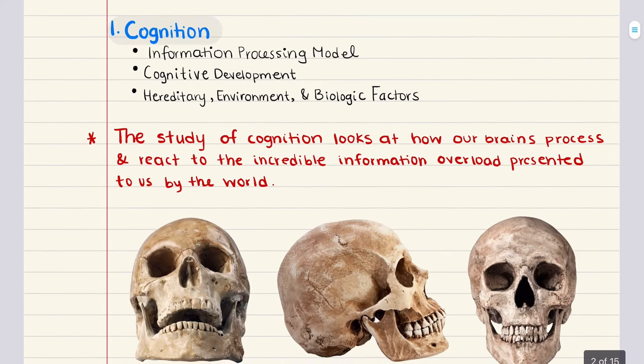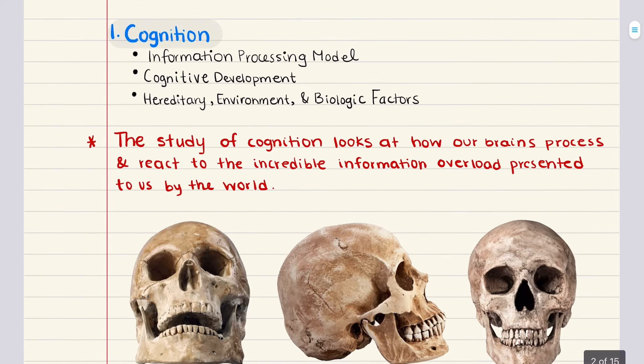Let's get started with the first objective titled Cognition. The study of cognition looks at how our brains process and react to the incredible information overload presented to us by the world on a day-to-day basis. Cognition overall is not a uniquely human trait, but we are certainly the most advanced species on the planet in terms of complex thought.